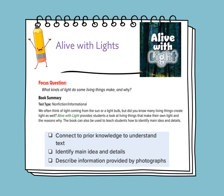Alive with Light. The focus question: what kinds of light do some living things make and why? The genre of the story is an informational text and it's a non-fiction story. We often think of light coming from the sun or a light bulb, but many living things create light as well. This book provides a look at living things that make their own light and the reason why, and teaches how to identify the main idea and supporting details. Our objectives are to connect prior knowledge to understand the text, to identify the main idea and the details, and to describe the information provided by the photographs.